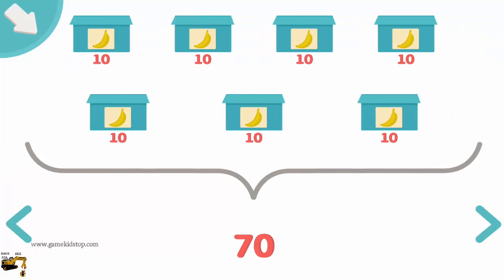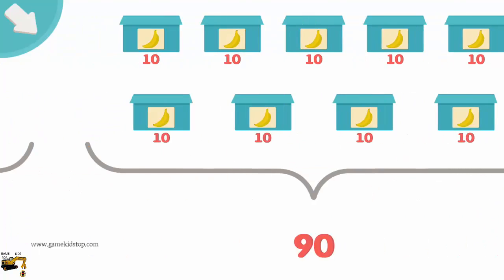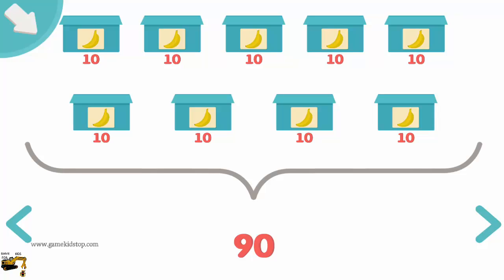This is the number 70. The number 70 is made up of two digits. The first digit shows the number of 10s and the second digit the number of units. In the number 70 there are seven 10s. So 7 times 10 is 70. This is the number 80. The number 80 is made up of two digits. The first digit shows the number of 10s and the second digit the number of units. In the number 80 there are eight 10s. So 8 times 10 is 80. This is the number 90. The number 90 is made up of two digits. The first digit shows the number of 10s and the second digit the number of units. In the number 90 there are nine 10s. So 9 times 10 is 90.